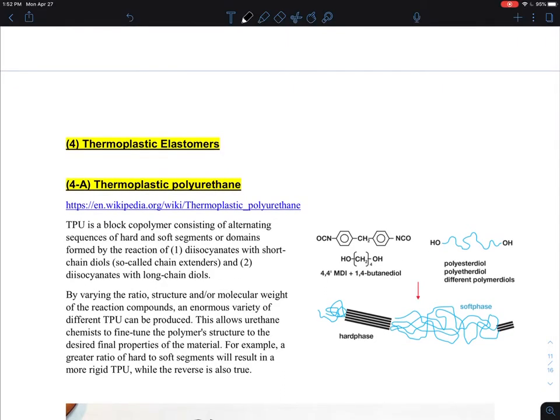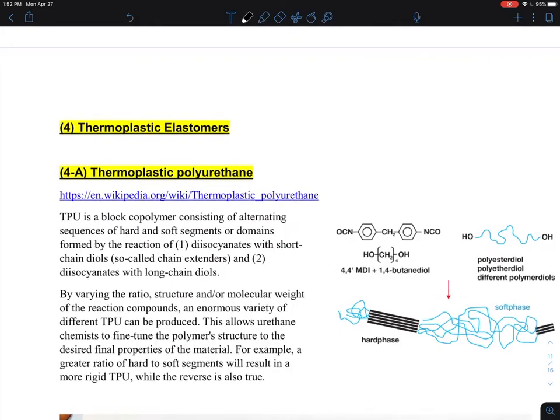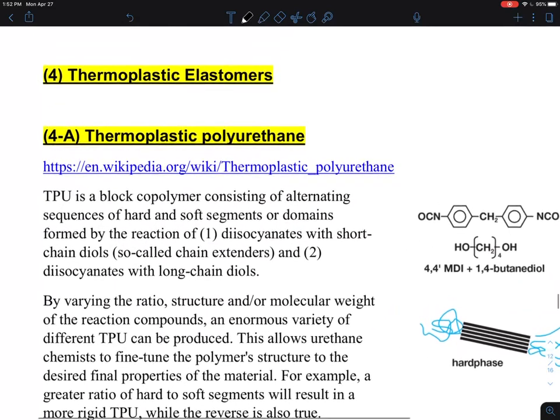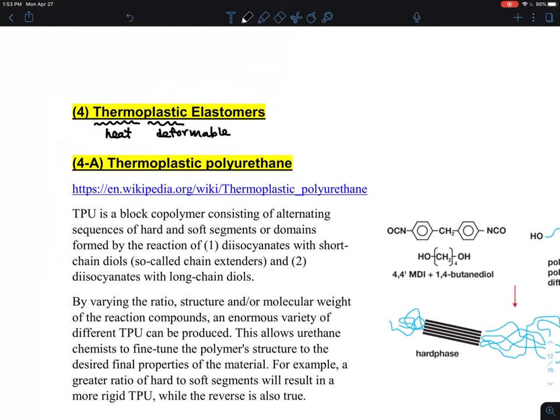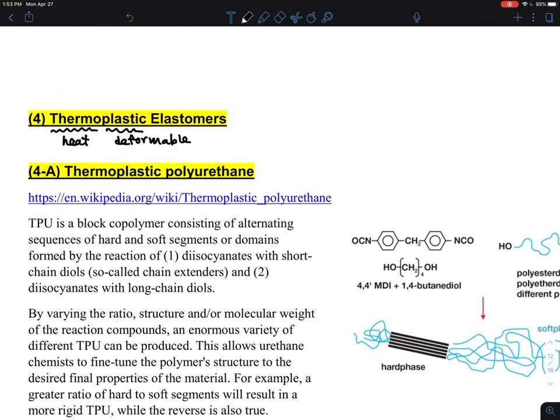Okay, so I'm going to talk about thermoplastic elastomers. There are two categories. I will start with thermoplastic urethane. Thermo means applying heat, plastic means deformable, and elastomer is elastomer. If you think about a rubber band, which is an elastomer, you cannot reshape it.